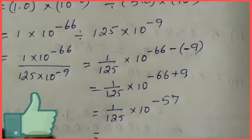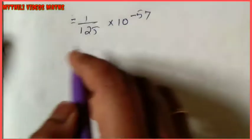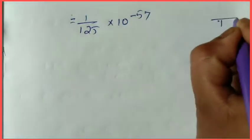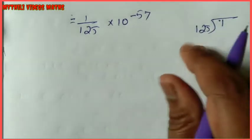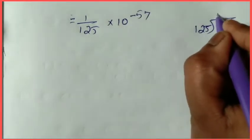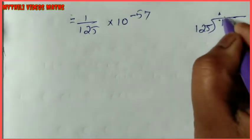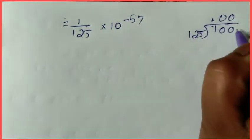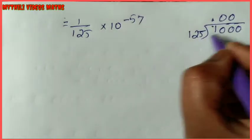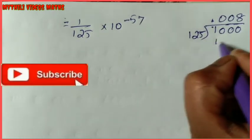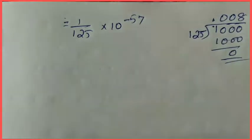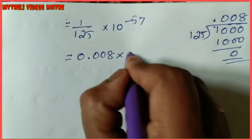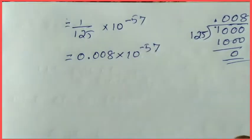Now divide 1 by 125. We perform the long division: 1000 divided by 125 is 8 times (8 × 125 = 1000), so 1/125 equals 0.008. Therefore, 1/125 into 10 power minus 57 equals 0.008 into 10 power minus 57.